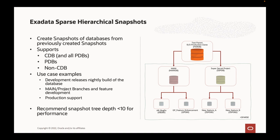Be aware of the recommended snapshot tree depth — the chain should not exceed more than 10 snapshots in any direction for performance reasons. There's no technical limitation beyond that, but in testing we've seen a degradation in performance once you get past the 10-snapshot level. So just bear that in mind — maybe that means you need a few different production clones at different points in time to enable different testing on different data sets throughout the lifecycle.